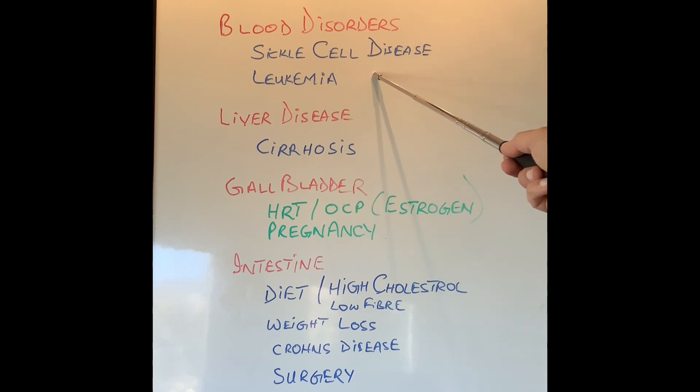So starting from blood disorders, sickle cell disease, in which the lifespan of the red blood cells is very short and they break down very quickly and very easily. More bilirubin is formed and hence pigment stones can happen. Same thing happened with leukemia.